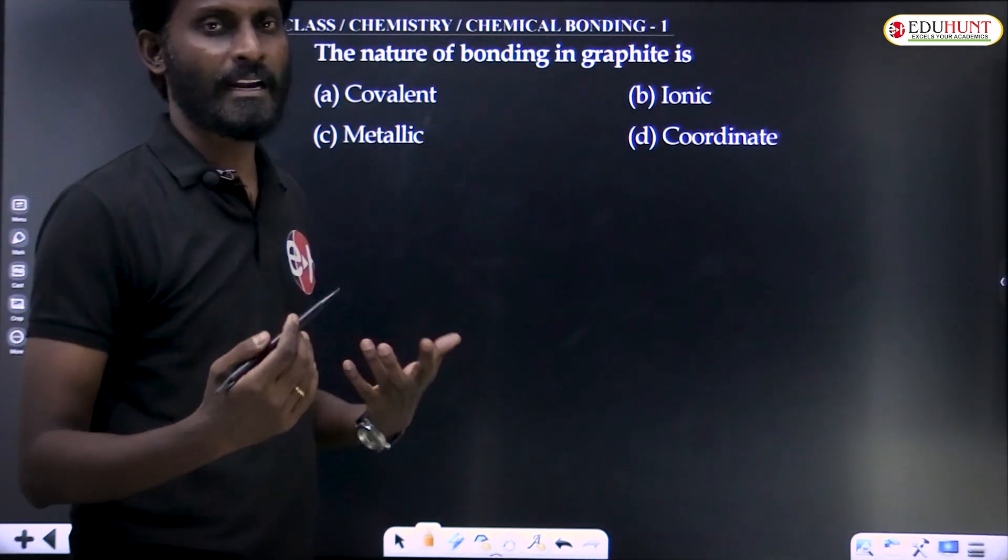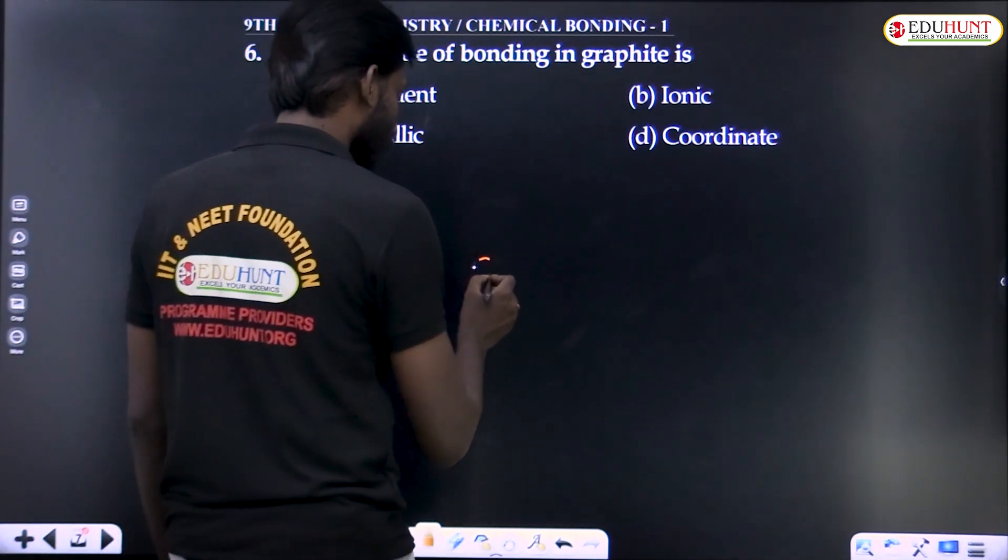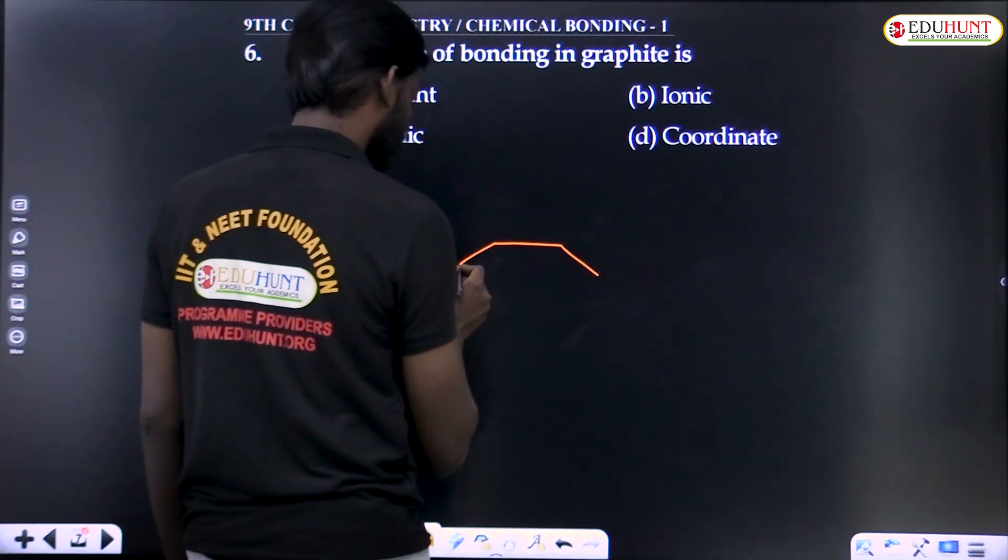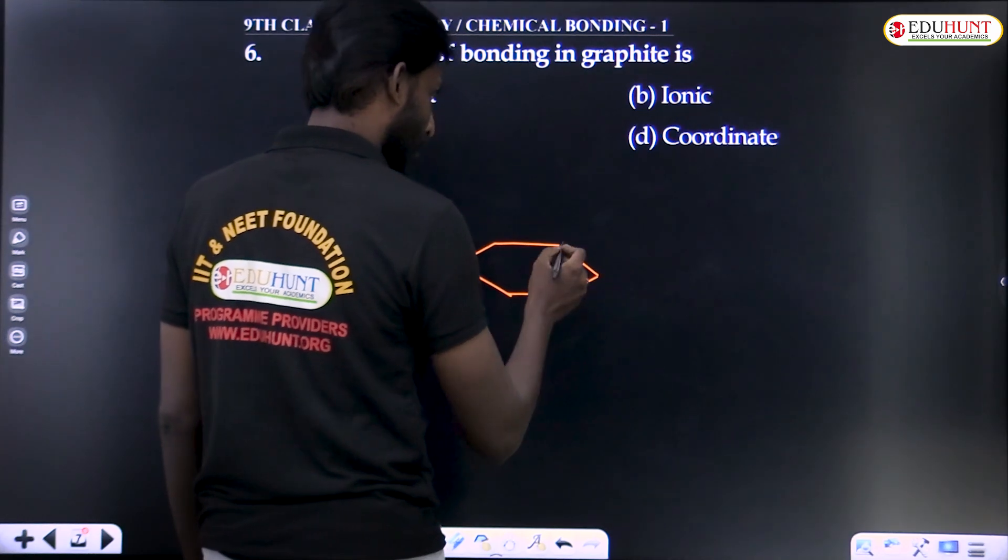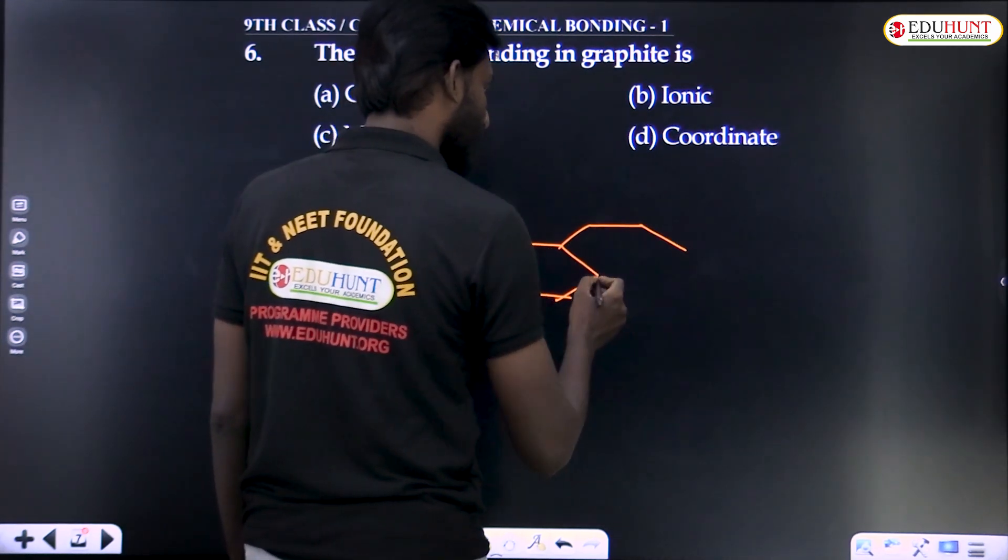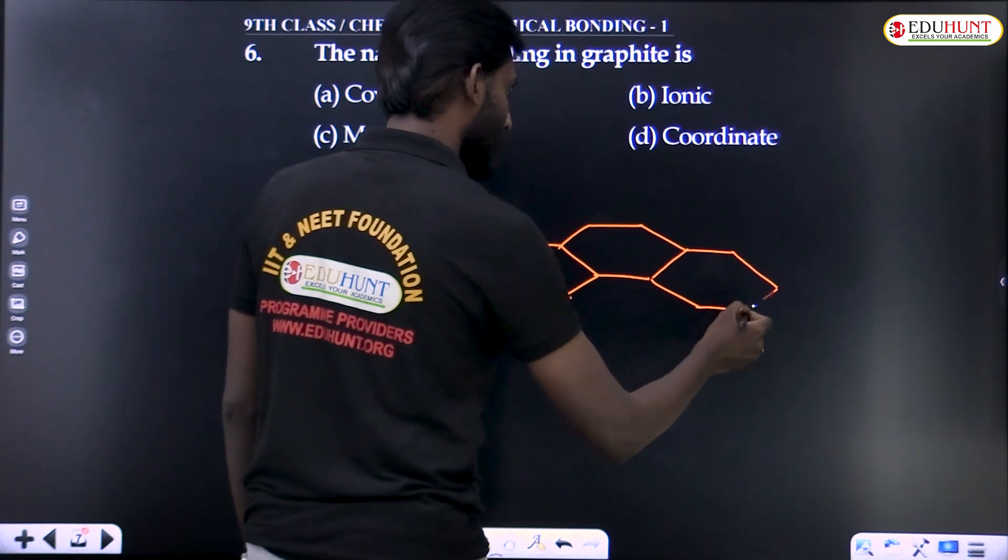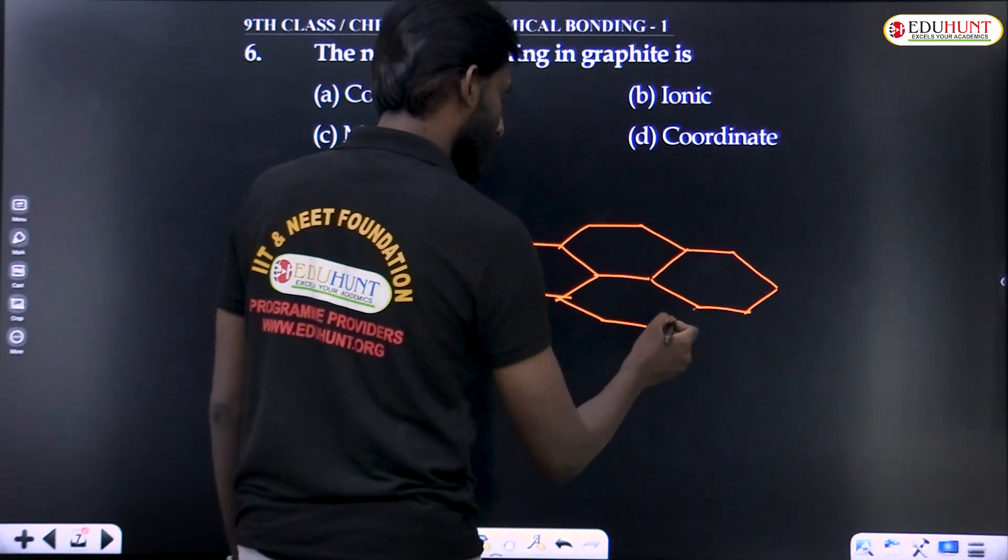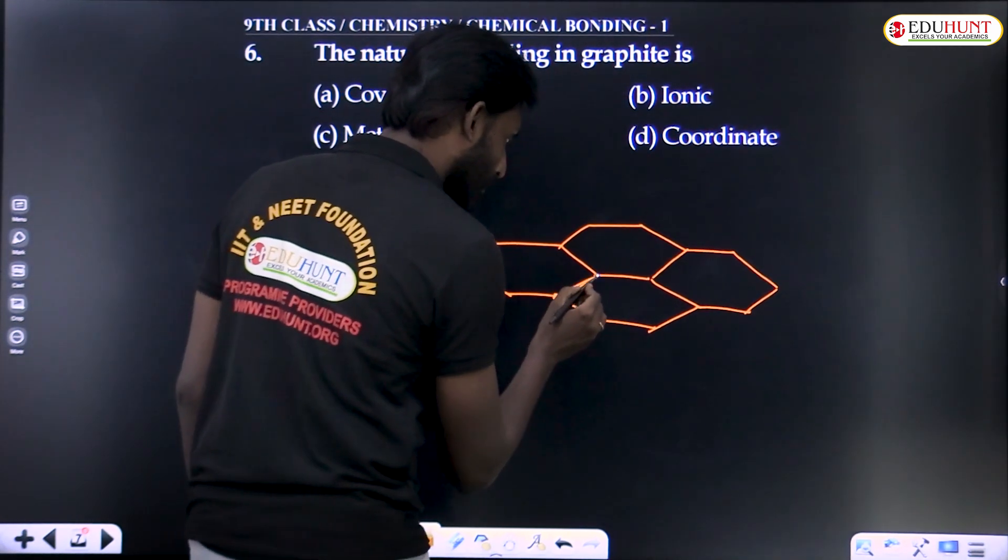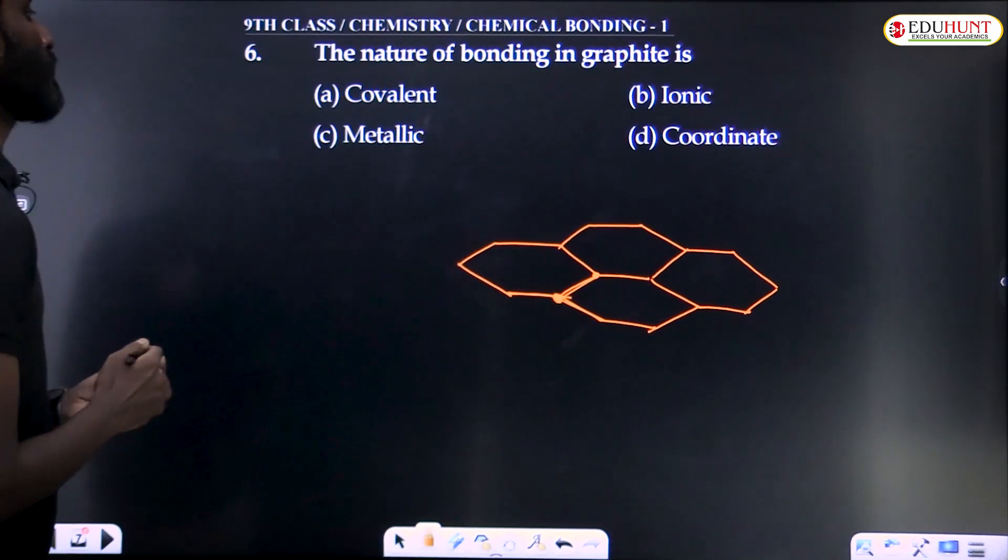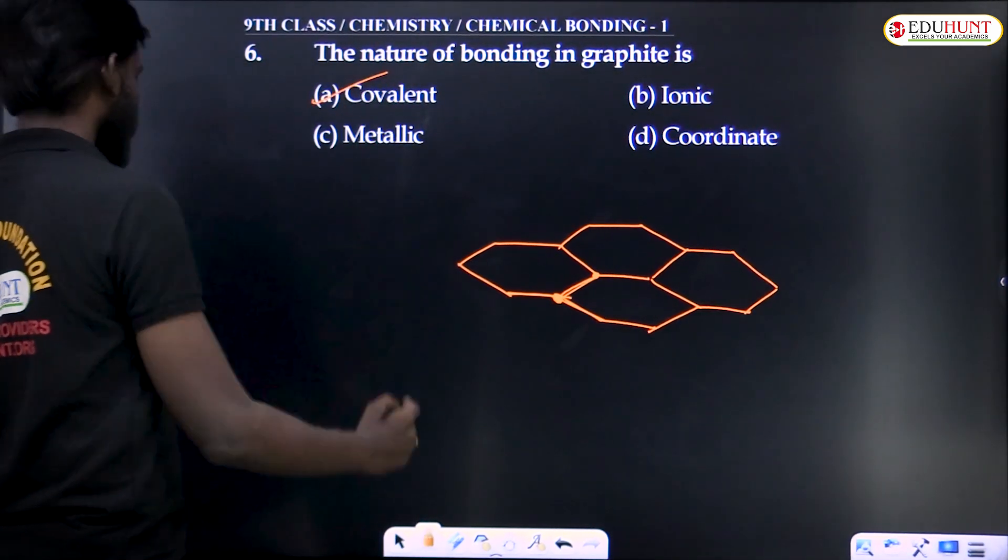The nature of bonding in graphite. Graphite has carbon. In graphite, carbon to carbon forms hexagonal rings. So the bonding in graphite is covalent, no doubt.